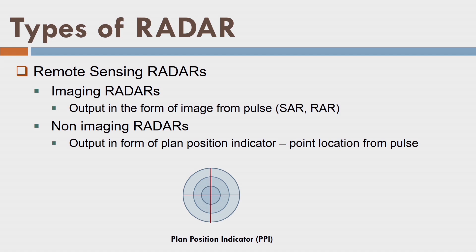We have used cameras in the optical wavelength range and LIDAR in the infrared range — both are nadir-looking. Radar is not nadir-looking; it is side-looking. The first pulse starts from the side of nadir and the last pulse is also to the side. So it is a side-looking airborne radar. There are two types of radars: imaging radar and non-imaging radar. In imaging radar, the output is in the form of an image from the reflected pulse. Synthetic aperture radar and real aperture radar are examples of imaging radars.